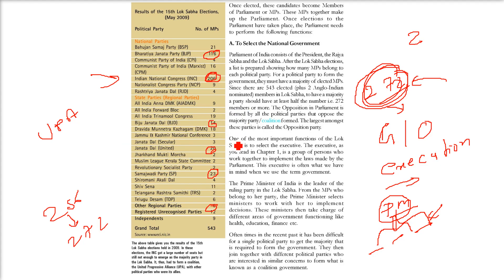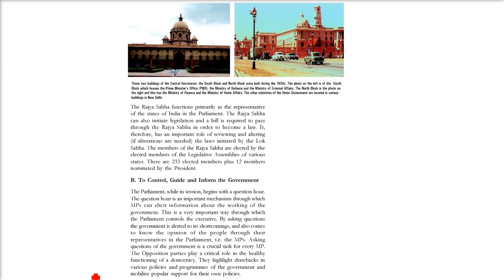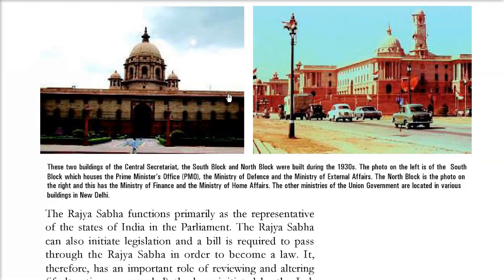This is how we call it a coalition government. UPA and NDA are coalition governments. These are the two buildings - the South Block and the North Block. They were built in the 1930s. The South Block houses the PMO (Prime Minister's Office), Ministry of Defence, and Ministry of External Affairs. The North Block houses the Ministry of Finance, Ministry of Home Affairs, and there are other ministries also in various parts of Delhi.